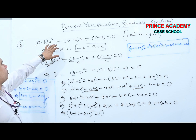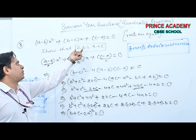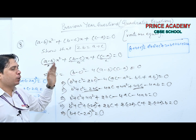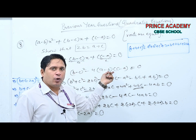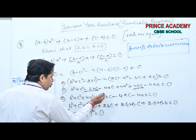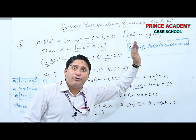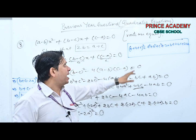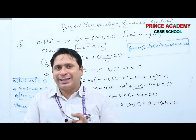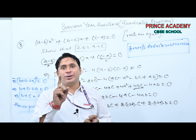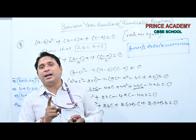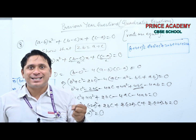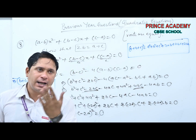To summarize: we set D = 0 because roots are equal, substituted the values of A, B, C, and used the algebraic identity A+B+C whole square = A²+B²+C²+2AB+2BC+2CA from Class 9 to recognize the expression. If you need to review algebraic identities, check the Class 9 playlist video on Exercise 2.5.